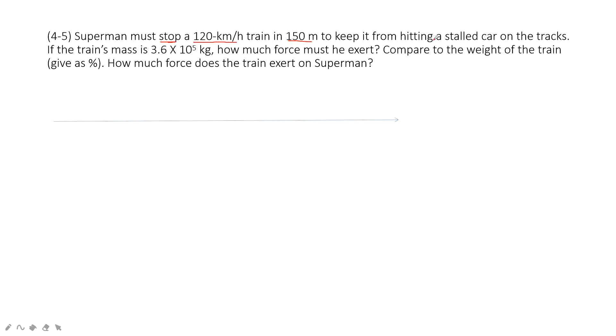To keep it from hitting a car on the track. From the first sentence, the initial velocity is given. Do you agree? The final velocity is given, zero, because it is stopped. And also the displacement is given.